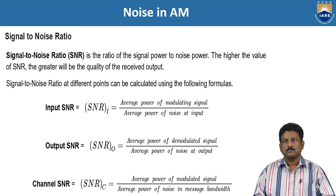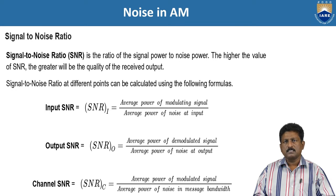First we need to know the definition of signal-to-noise ratio, SNR. It is the ratio of the signal power to the noise power. The higher the value of the SNR, the greater will be the quality of the received output. Signal is the numerator part, noise is the denominator part. If signal strength is high, noise will be very low, so the ratio is also high, meaning received signal quality is high with no disturbance.